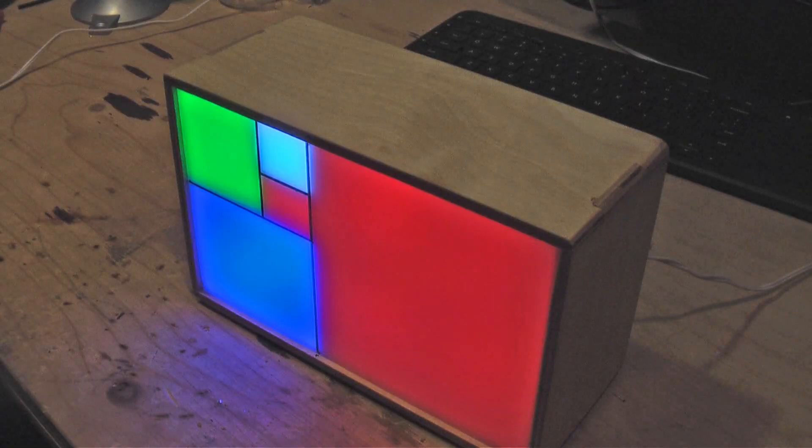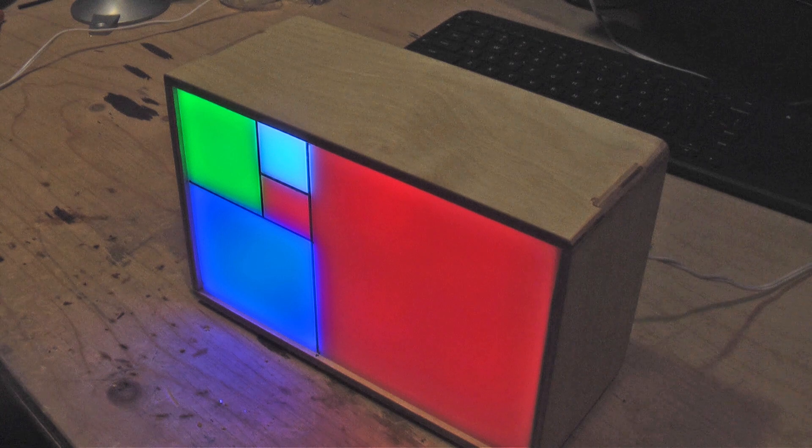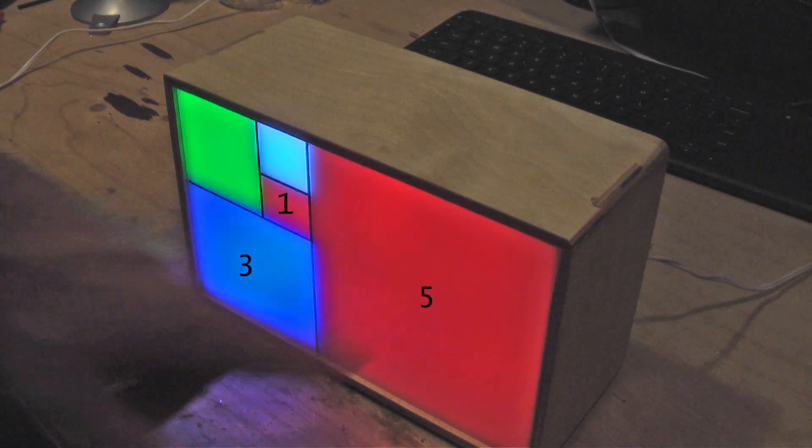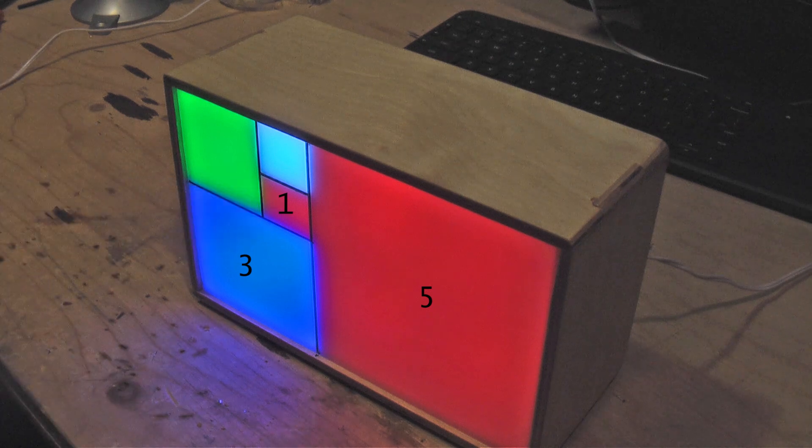To read time on the Fibonacci clock, you need to do some math. To get the hour, you add up the red and the blue squares. Here we have 5 plus 3 is 8 plus 1, 9. It's 9 o'clock.